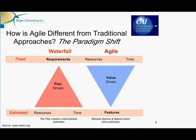Now, how is Agile different from traditional? I love this picture — when I first was learning about Agile, this is what really drove it home for me. The source is DSDM, one of the Agile practices. What they say is essentially all we've done is flipped this triangle. In waterfall or traditional approaches, all requirements are defined at the beginning of the project and then locked in or fixed. We then use that defined scope to estimate the resources we'll need and the amount of time it's going to take. We end up with a plan-driven project where we always have to guard against scope creep or changing requirements, because they might throw off our resource and time estimate.